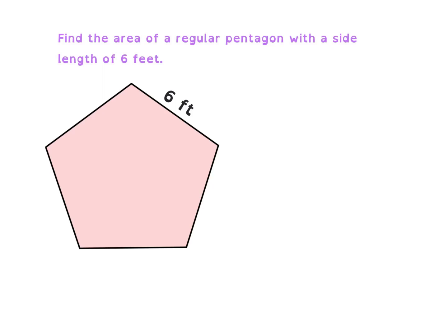Now let's look at the last example. We're looking at a pentagon — find the area of a regular pentagon with a side length of 6 feet. We want to solve for the apothem. If we create a triangle by connecting one of the sides to the central angle, we're going to get a central angle of 72 degrees, since this is a pentagon and we divide 360 by 5. The apothem is going to be from that center to the side, perpendicular to it.